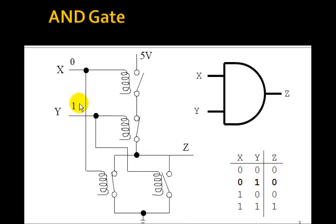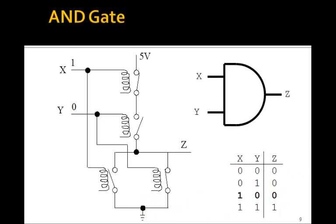If we make Y1 and X0, we want the output to be 0. Well, this Y1 will close this one, but this one's still open, so there's no connection from Z to 5 volts. This one will open this one, but this one's still closed, so there's still a connection here to ground, so the output's still 0. If X is 1 and Y is 0, we want the output to be 0. Now this one's closed, and this one is open, and this one up here is closed, and this one's open, so again we have this connection to ground.